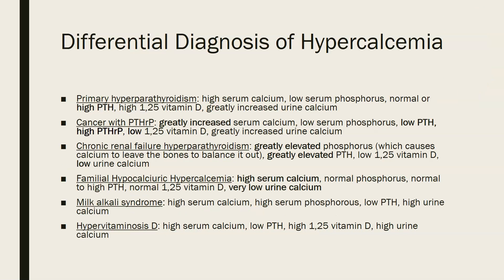For the differential diagnosis of hypercalcemia: in primary hyperparathyroidism, you expect high serum calcium and low serum phosphorus — remember they move in opposite directions — normal or high parathyroid hormone (because it's hyperparathyroidism), high 1,25-hydroxyvitamin D, and greatly increased urine calcium, since the excess calcium is excreted in urine.